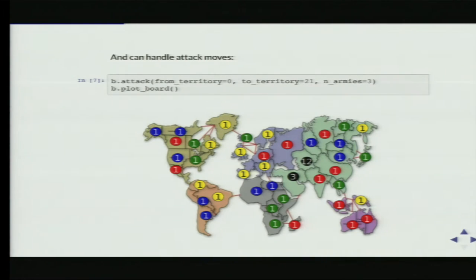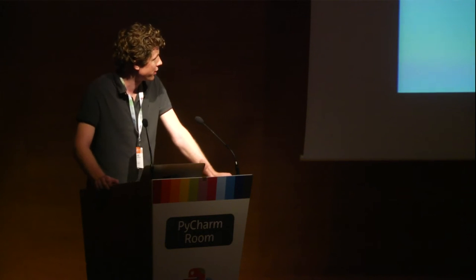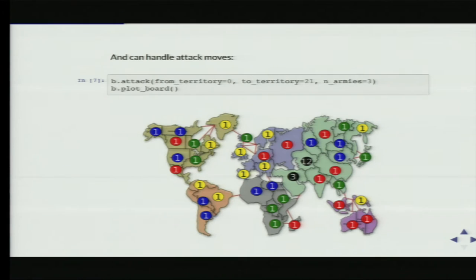The board can also handle attack moves. You just call the attack method from a certain territory to another territory — it has to be owned by someone else, with a certain number of armies. It will throw the dice for you, and if you're lucky you can take over another territory. For example, the black player moved into the Middle East. That was easy with 15 armies against one.